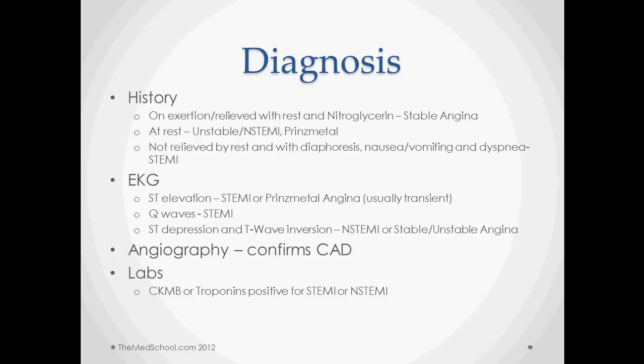On EKG, if we have a STEMI we'll see ST elevation. Prinzmetal's angina can also cause ST elevation, but it's usually transient and not associated with a Q wave — so that's something you can recheck. We're also not going to see elevation of cardiac enzymes in Prinzmetal's. Q waves are associated with STEMIs; ST depression and T wave inversion are usually associated with NSTEMIs or stable/unstable angina.